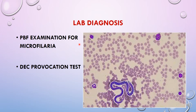PBF examination for microfilaria was sent to the microbiology department, and the blood was collected between 10 to 12 in the night. Alternatively, a DEC provocation test can be done if we want to collect the blood in the daytime. After Giemsa staining, the picture was like this — this is the microfilaria parasite and these are RBCs. This is a picture of PBF.